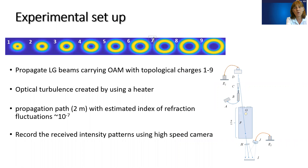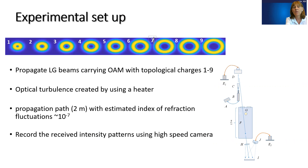We selected to work with nine topological charges of Laguerre-Gaussian beams, order zero, and we created them using a spatial light modulator. We created optical turbulence using a single heater in an underwater tank. We propagated over about two meters of propagation length, and the estimated index of refraction fluctuations are on the order of 10 to the minus seven. We recorded images using high-speed cameras and will analyze scintillation index and vortex wander as our performance parameters.